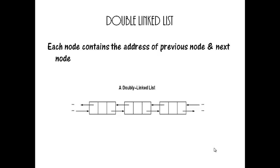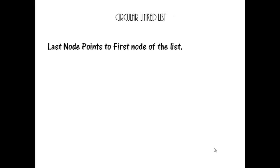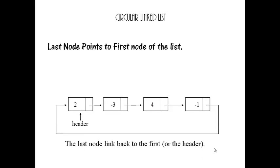The next one is circular linked list. In circular linked list, the last node contains the address of the first node — that is, the last node points to the first node of the list. Consider the picture: here the last node points to the first node in a circular manner.